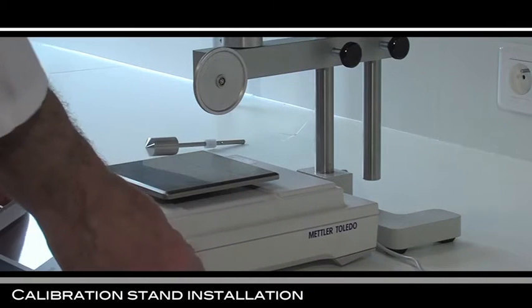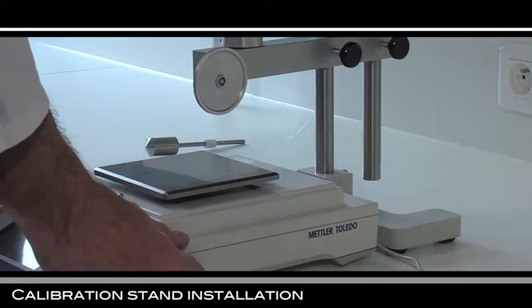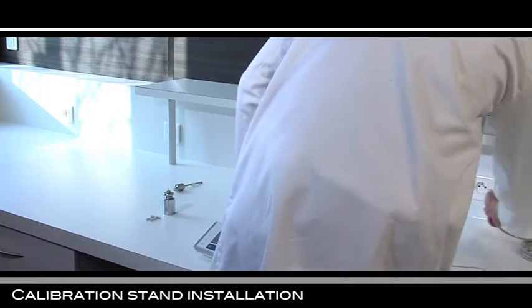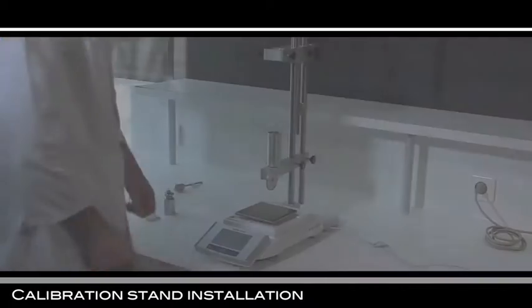Place the balance under the calibration stand. Plug and switch the balance on. Adjust the level with the adjustable feet and make the zero.